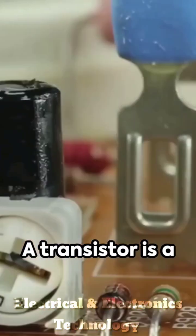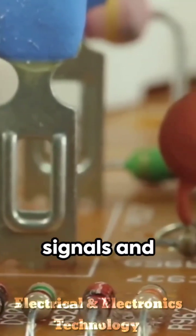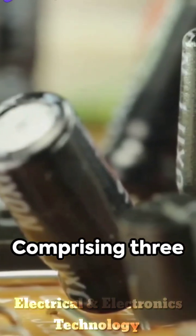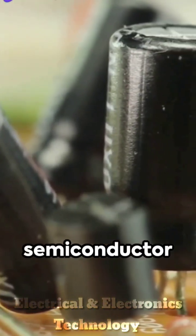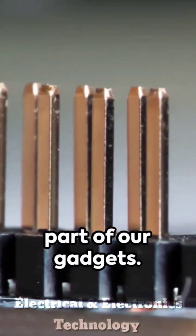A transistor is a semiconductor device crafted to amplify or switch electronic signals and electrical power. Comprising three layers of semiconductor material, either silicon or germanium, it's an inescapable part of our gadgets.